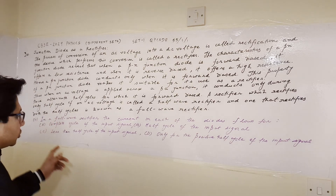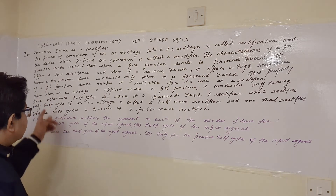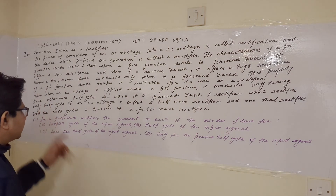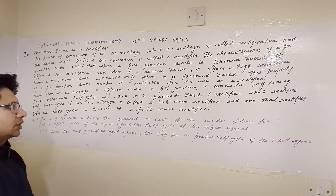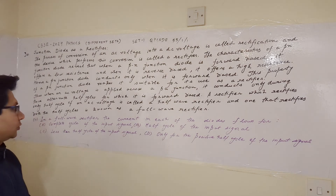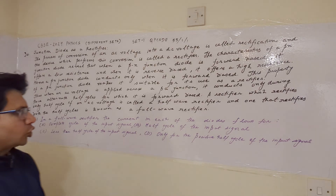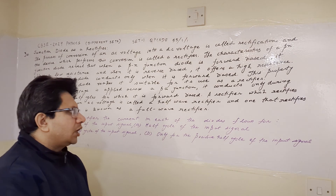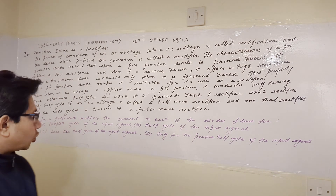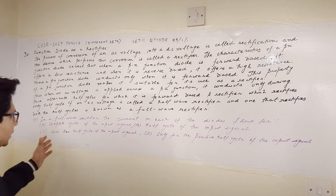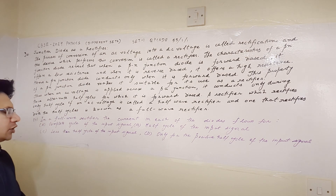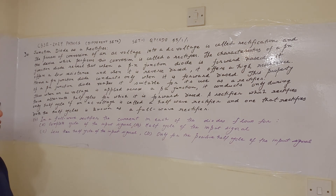The second question based on this paragraph is: in a full wave rectifier the current in each diode flows for — option A: complete cycle of the input signal, option B: half cycle of the input signal, option C: less than half cycle of the input signal, and option D: only for the positive half cycle of the input signal.